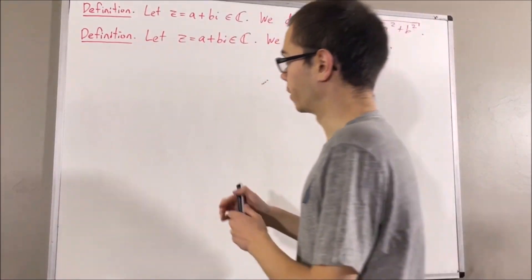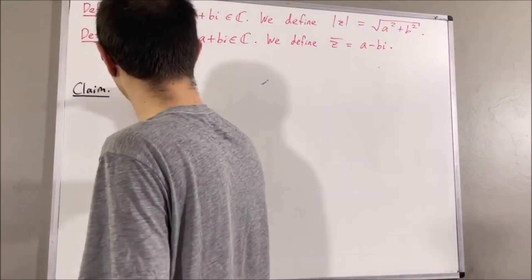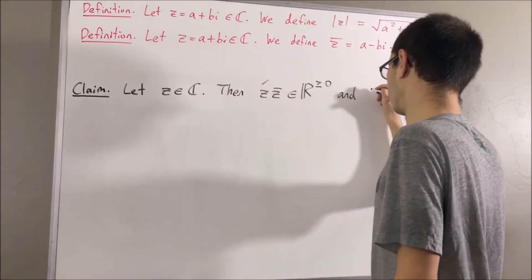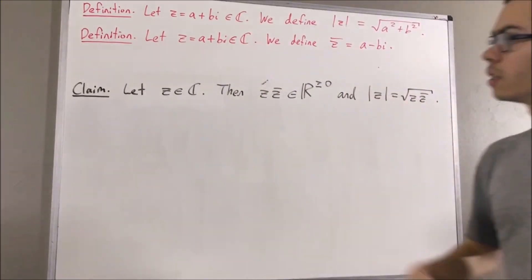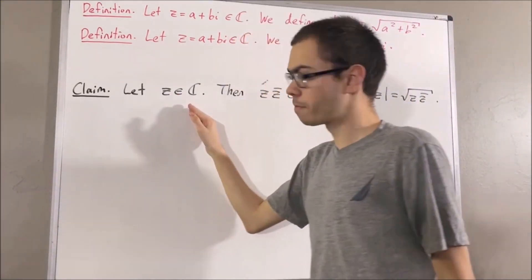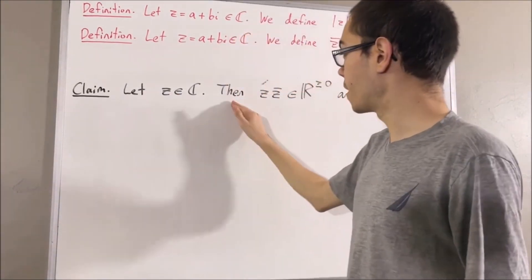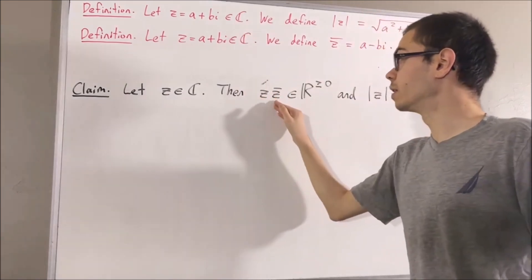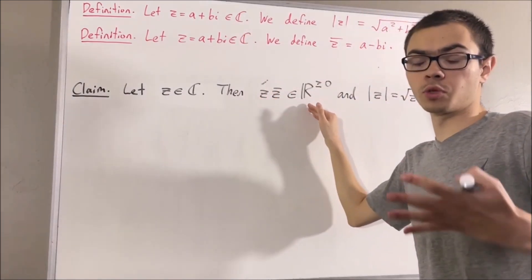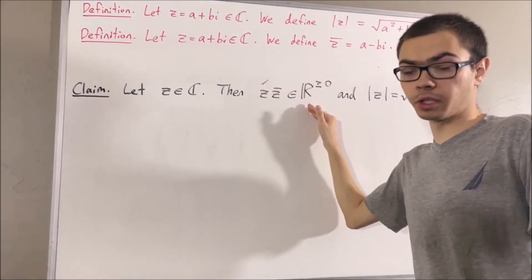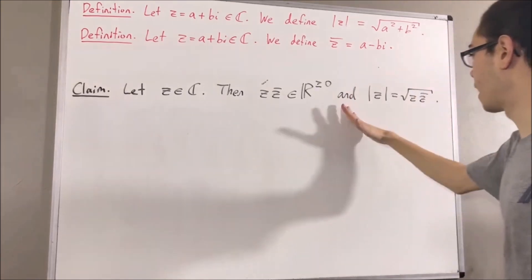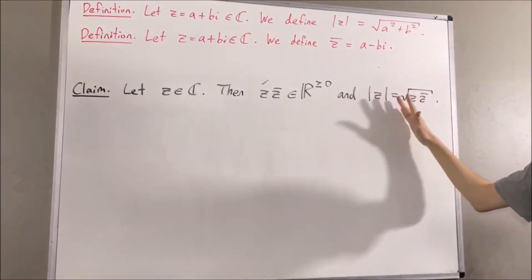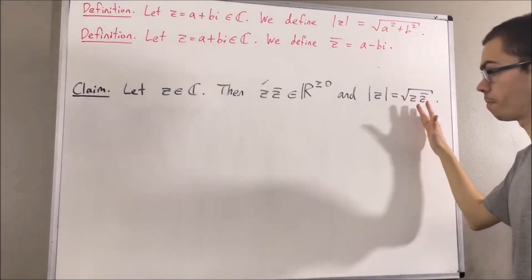The claim is the following. Let z be a complex number. Then z times z bar is an element of the real numbers which are greater than or equal to zero, and in fact the absolute value of z is equal to the square root of z times z bar.